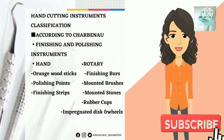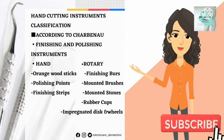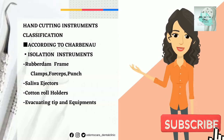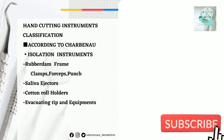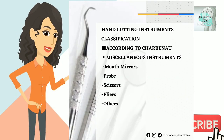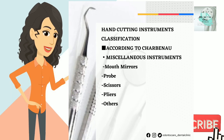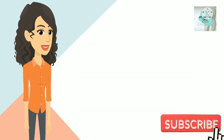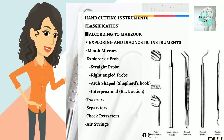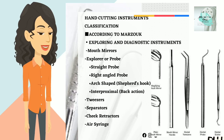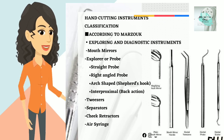Under rotary finishing instruments: finishing burs, mounted brushes, mounted stones, rubber cups, and impregnated discs and wheels. Number 5: Isolation instruments — rubber dam frame, saliva ejectors, cotton roll holders, and evacuating tip and equipment. Number 6: Miscellaneous instruments — mouth mirrors, probes, scissors, pliers, and others.